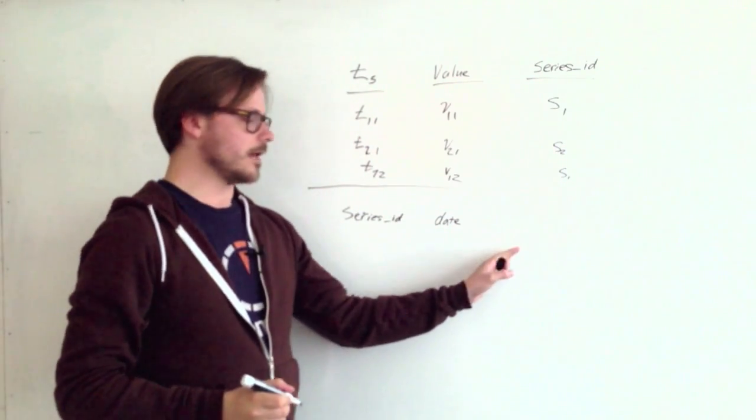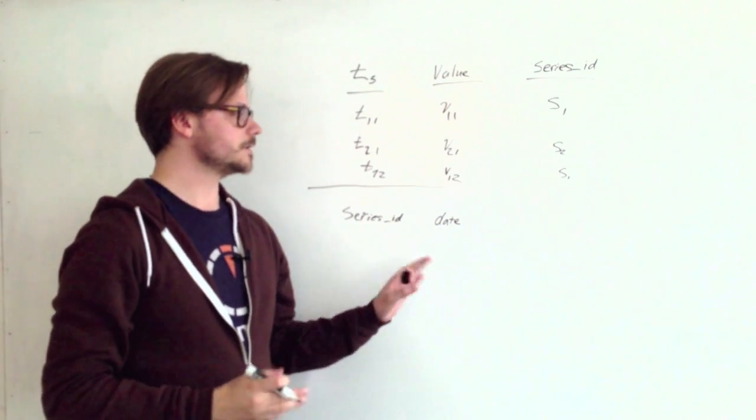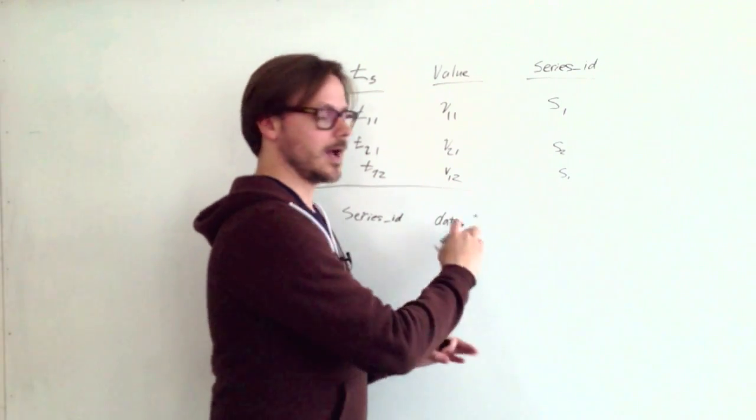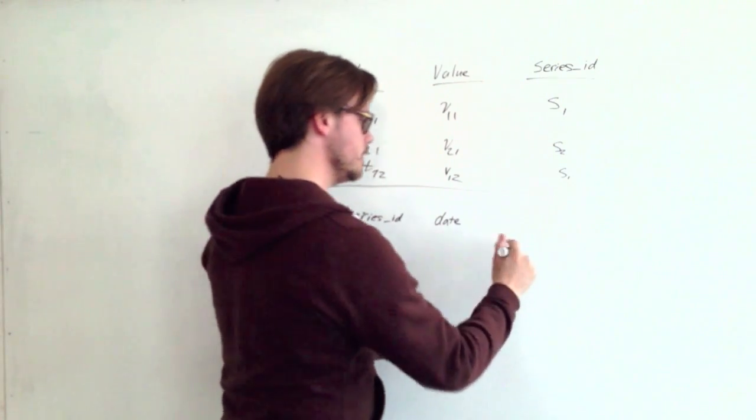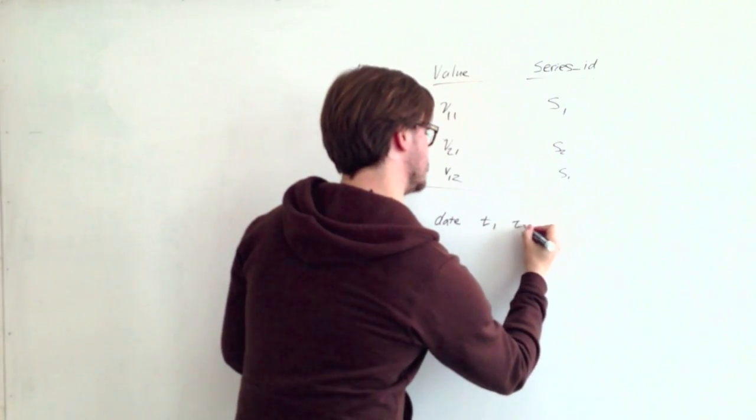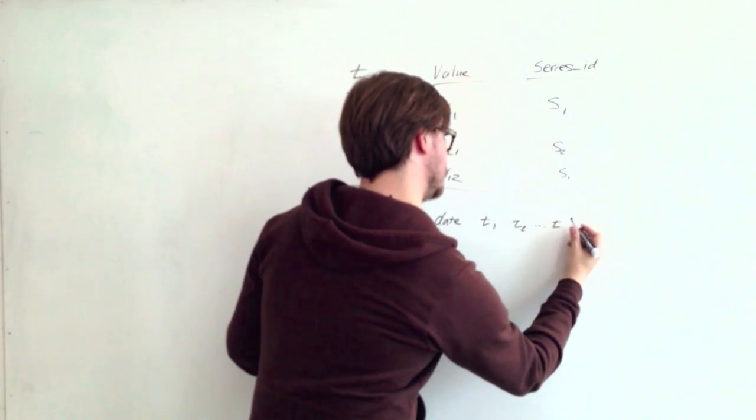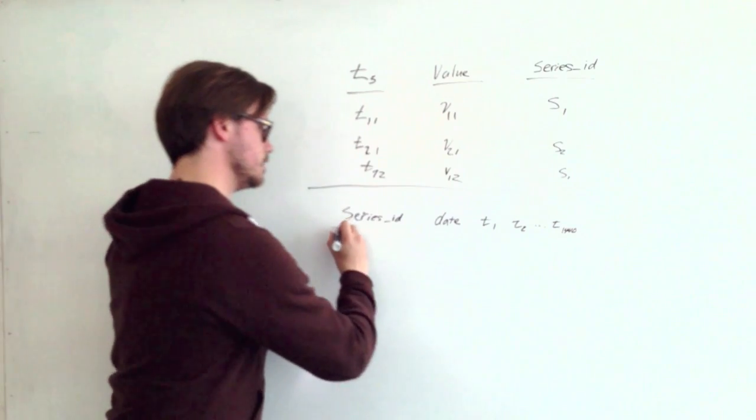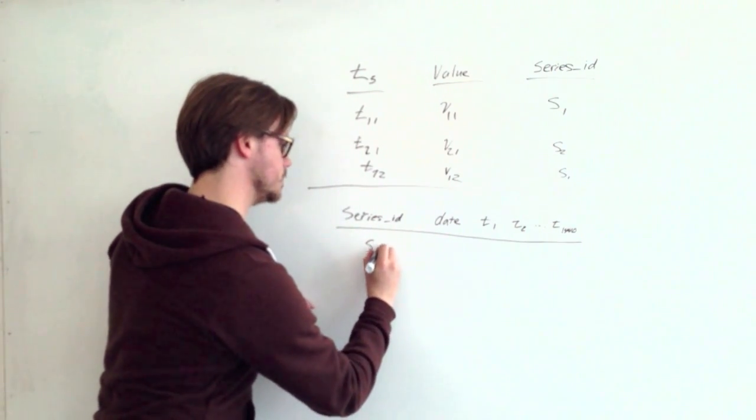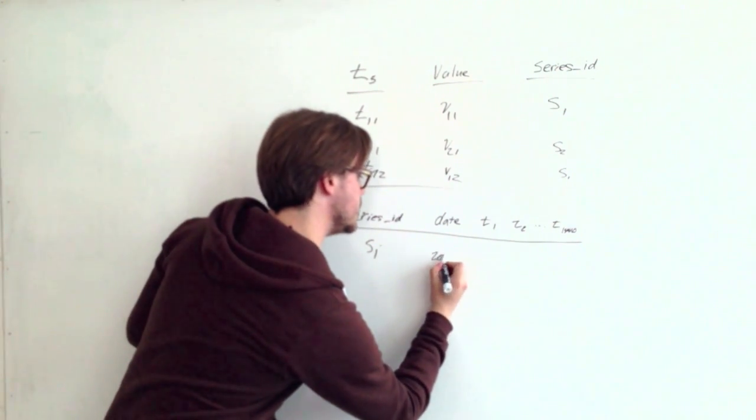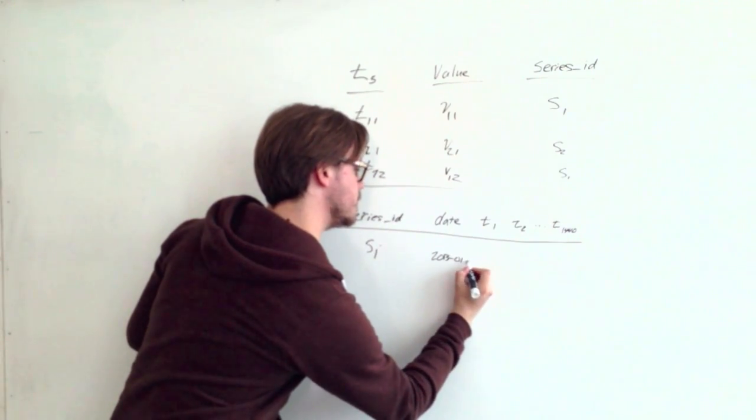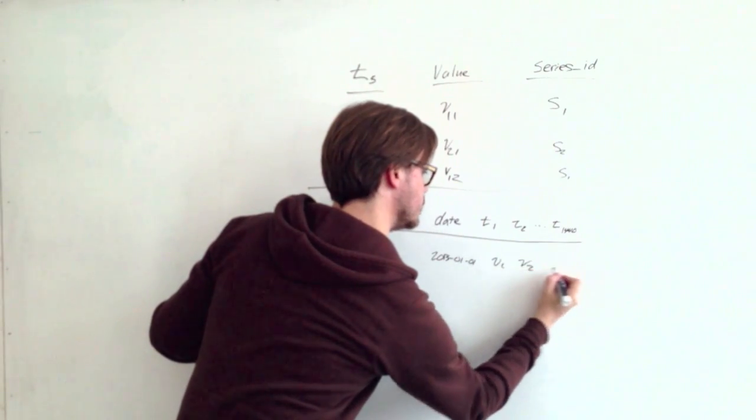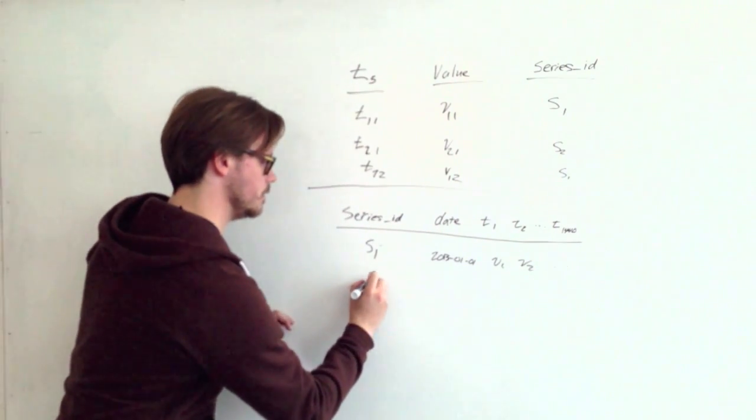And then a series of columns that represent the data points. So let's say we wanted to measure data once per minute. We would have 1,440 columns, one per minute of the day in this table: T1, T2, all the way to T1440. And then to store the data, we put series one, some date like New Year's Day, and then some values. And again, series two could come down here.